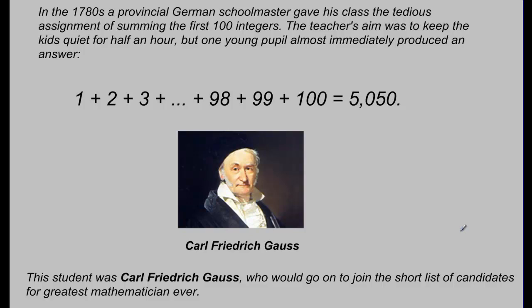His aim was to keep the kids quiet for about half an hour. But one young student almost immediately produced an answer: 1 plus 2 plus 3 all the way to 100 equals 5,050.